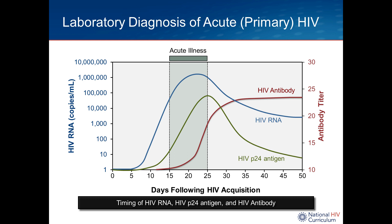It is useful to understand when people present with acute illness and how that matches up with serologic and viral load testing. Typically, if an individual presents with acute HIV, the laboratory pattern would be a very high viral load — often 800,000, a million, or two million. The P24 antigen test should be positive, and the antibody test using conventional IgM/IgG assays is usually negative. That is the typical pattern in someone presenting with a clinical illness of acute HIV.